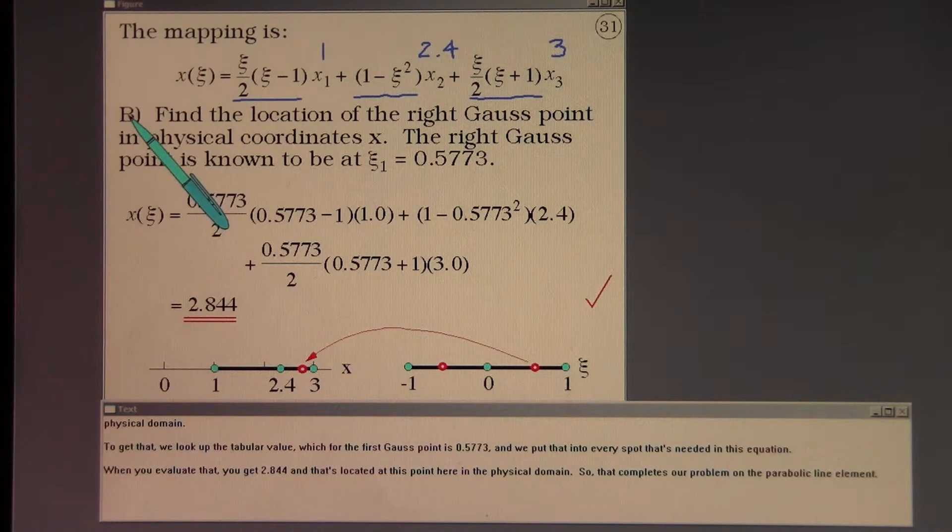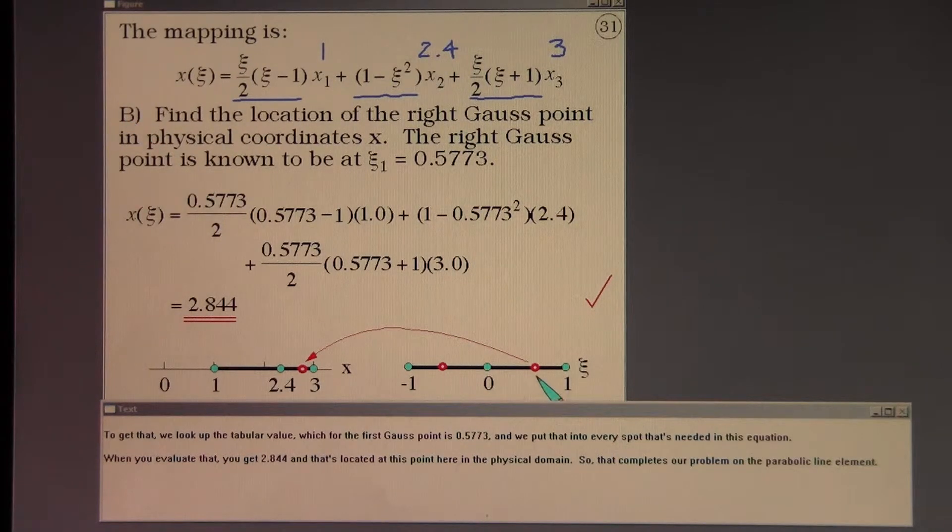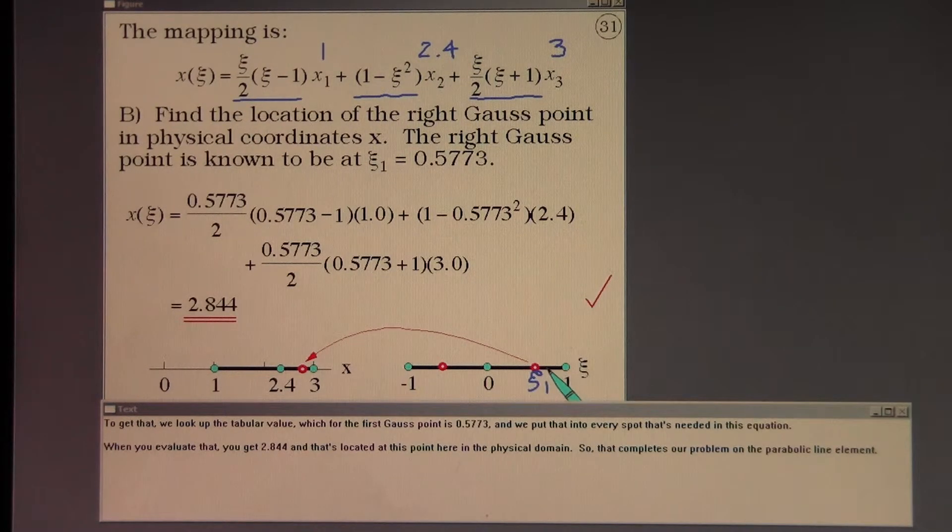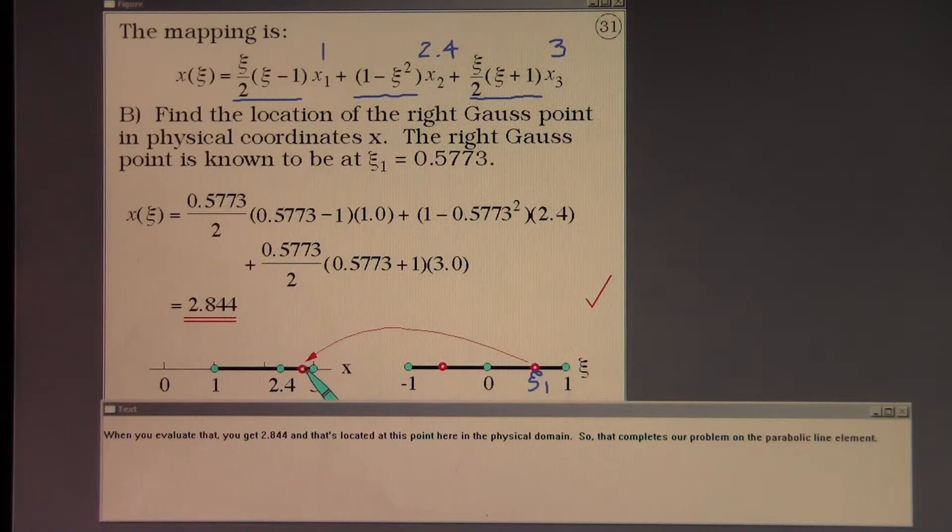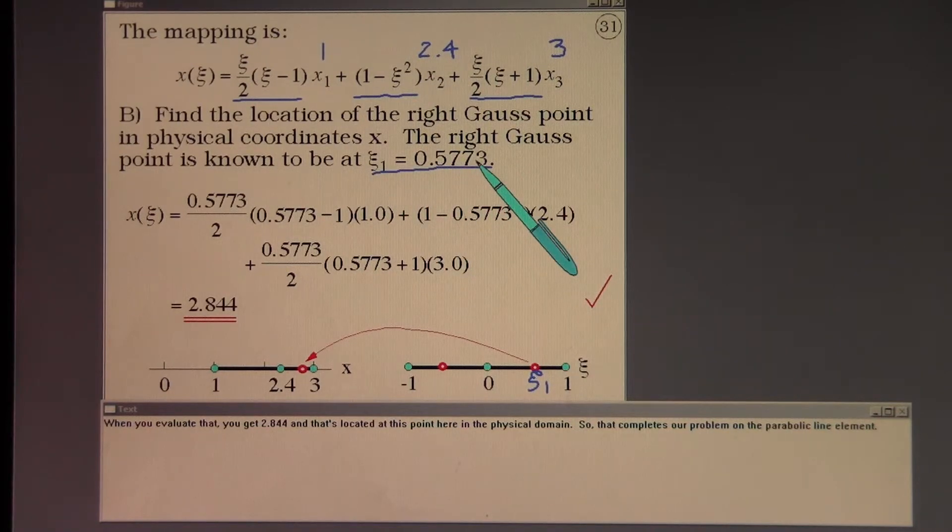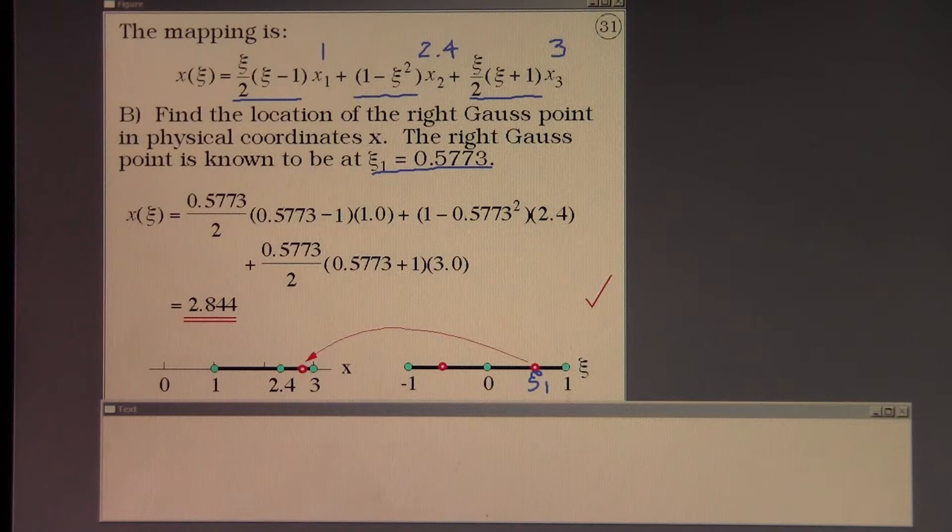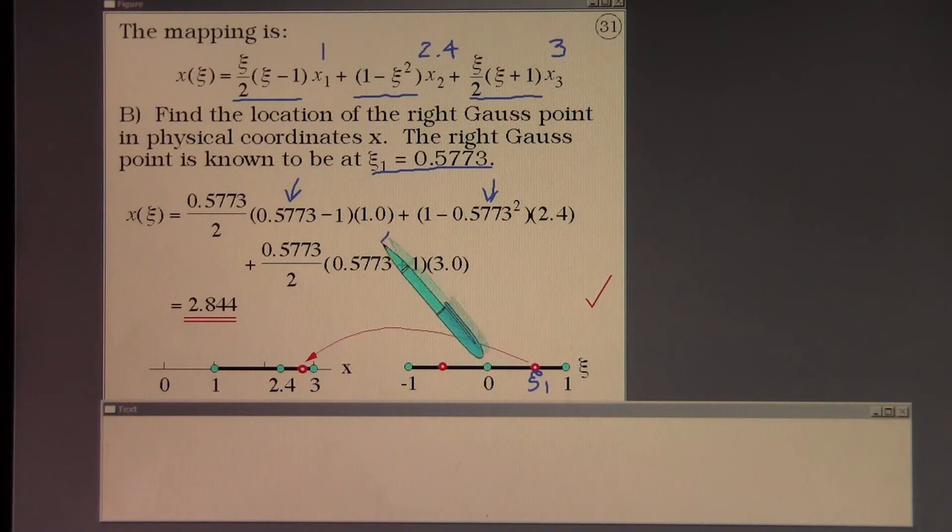Then in part B we're asked to evaluate a point that originally was called X1 here, the first Gauss point in the ξ domain and find out how that can map over into the physical domain. To get that we look up the tabular value which for the first Gauss point is 0.5773 and we put that into every spot that's needed in this equation. When you evaluate that you get 2.844 and that's located at this point here in the physical domain. So that completes our problem on the parabolic line element.